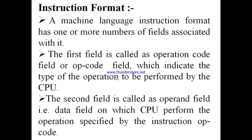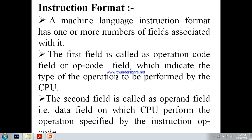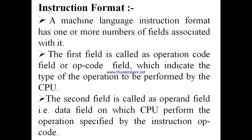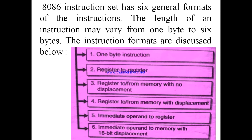The op code field indicates the type of operation to be performed by the CPU. The second field is called the operand field, that is the data field on which the CPU performs the operation specified by the first field. The 8086 microprocessor has six instruction formats.